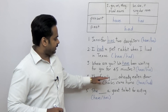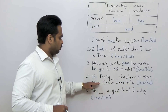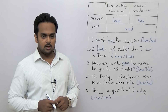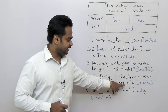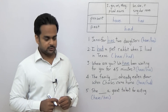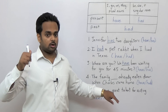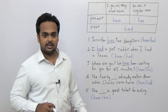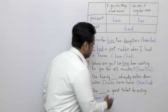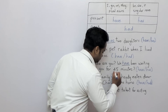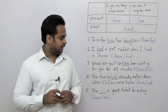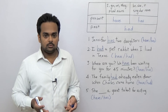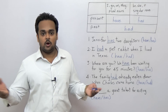Number four: 'The family ___ already eaten dinner when Charles came home.' You should immediately see that this is in the past tense, because we're talking about when Charles came home. So have or had? Easy — past tense: 'had.' The family had already eaten dinner when Charles came home. So when he came home, dinner was finished — no dinner for Charles!